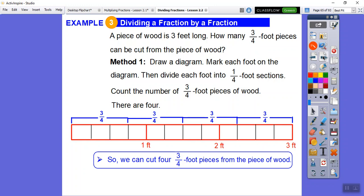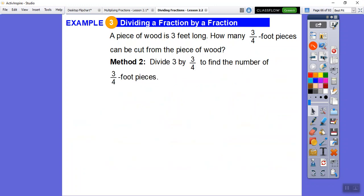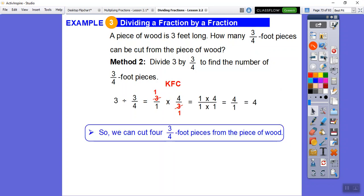The other way is to just do what we just did. We can divide three by three-fourths to find the number of three-fourths pieces. So three divided by three-fourths. Let's change this to a fraction, three over one. And then I went ahead and kept that as three over one, flipped this fraction. This fraction was three-fourths, so it's four-thirds. And then we changed that. Let's go ahead and cross-cancel. Those threes cancel. Now we can just multiply across. One times four, one times one, and we get four over one or four. So the same answer, we can cut four three-fourths pieces from the piece of wood.